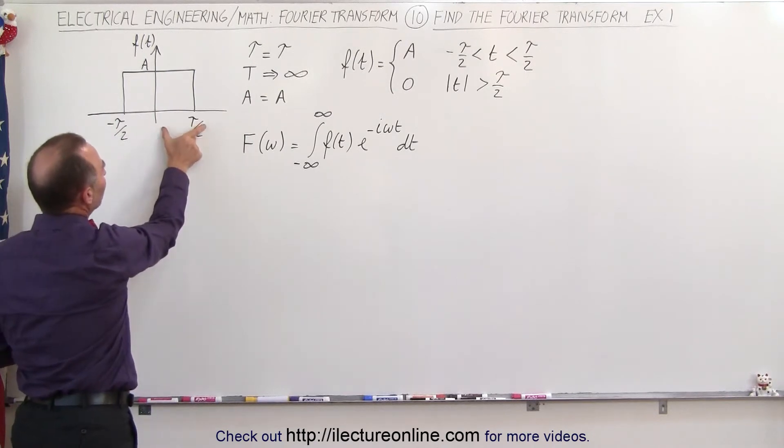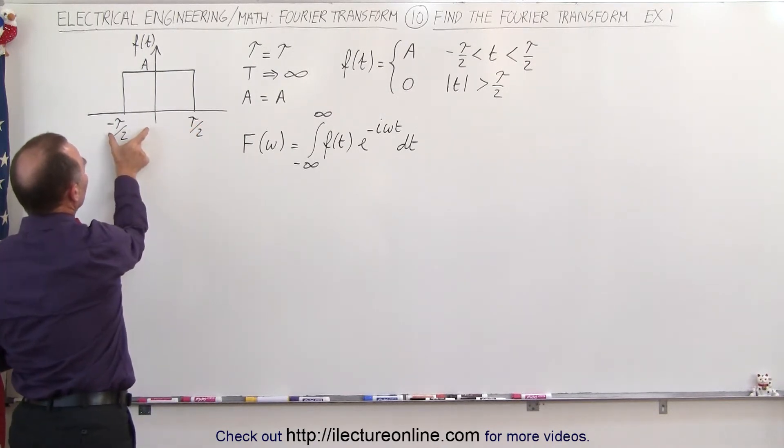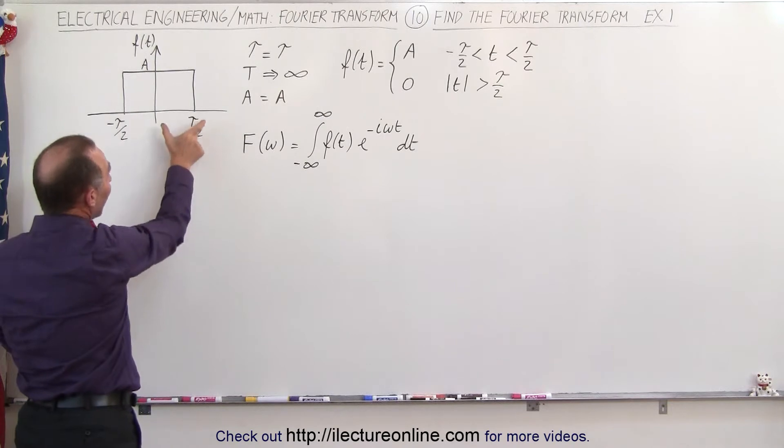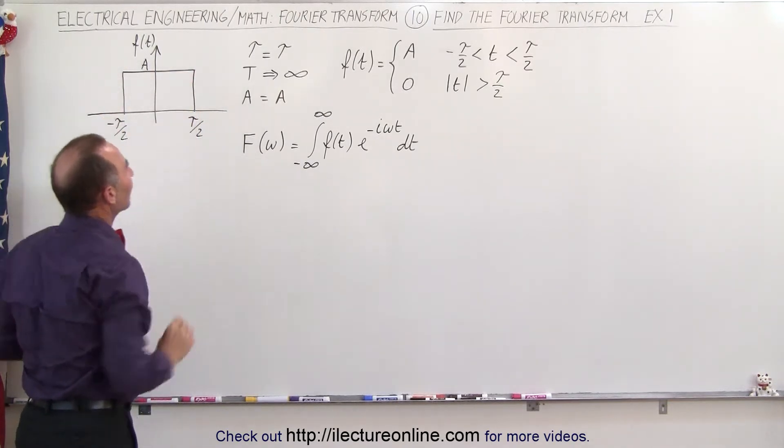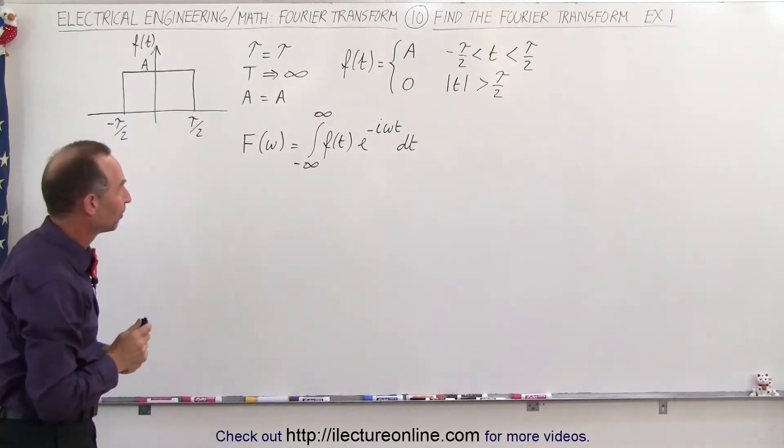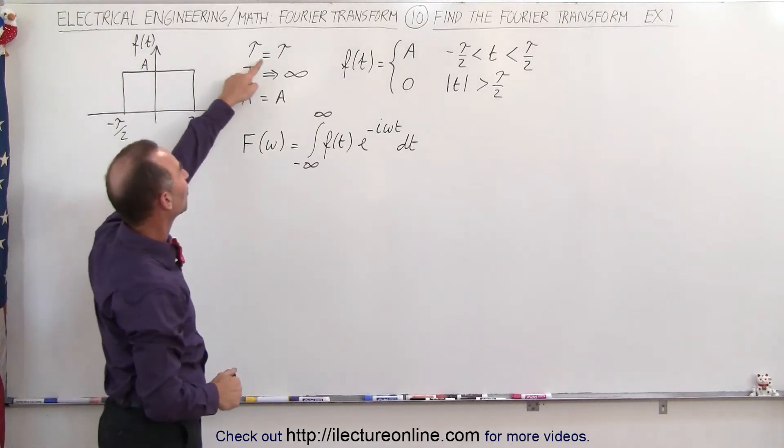So we have tau over 2 on the left and minus tau over 2 to the right—I should say tau over 2 to the right and minus tau over 2 to the left, which then defines the width of the pulse. So you can see that the pulse width tau is equal to tau.